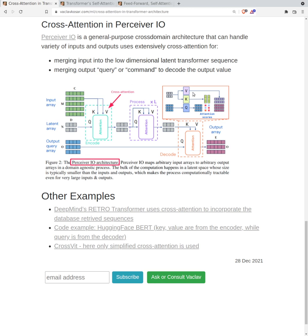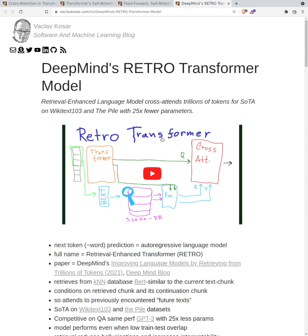That's how Perceiver IO and hierarchical Perceiver work. I have other related posts. For example, in DeepMind's RETRO transformer, cross attention is used to attend to retrieved sequences. In the RETRO transformer you have this database on which you retrieve based on the input, and then the output of the database are some encoded sequences from the training data.